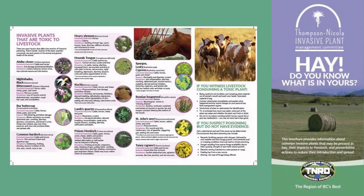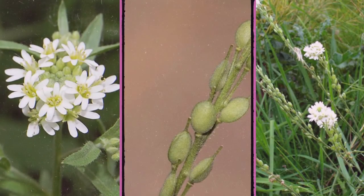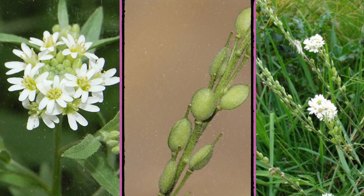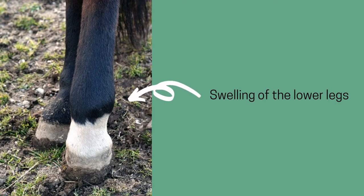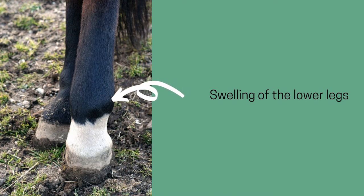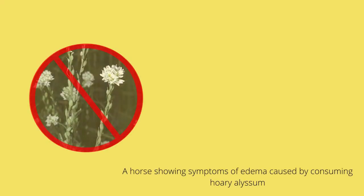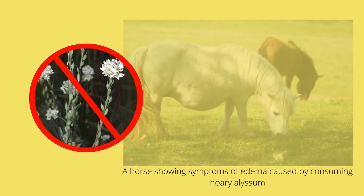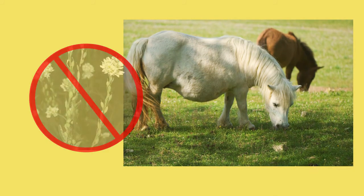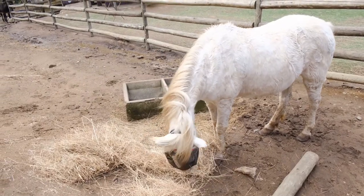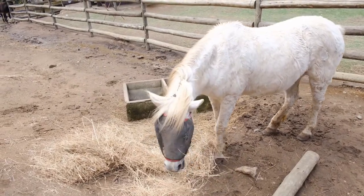Let's go over a few examples of invasive plants that are toxic to livestock. This invader is called hoary alyssum and it causes edema in horses. If ingested, symptoms like swelling of the lower legs, warm hooves, fever, diarrhea, stiffness of joints, and reluctance to move are common. Hay containing 20% or more of hoary alyssum should not be fed to horses.